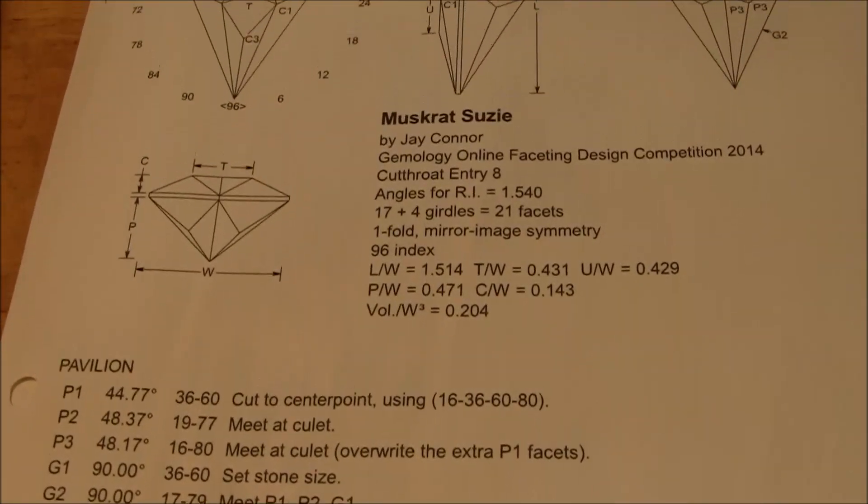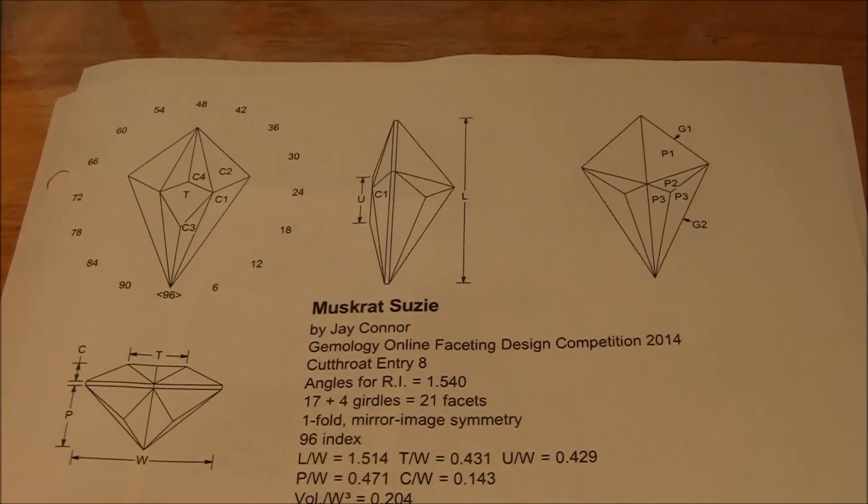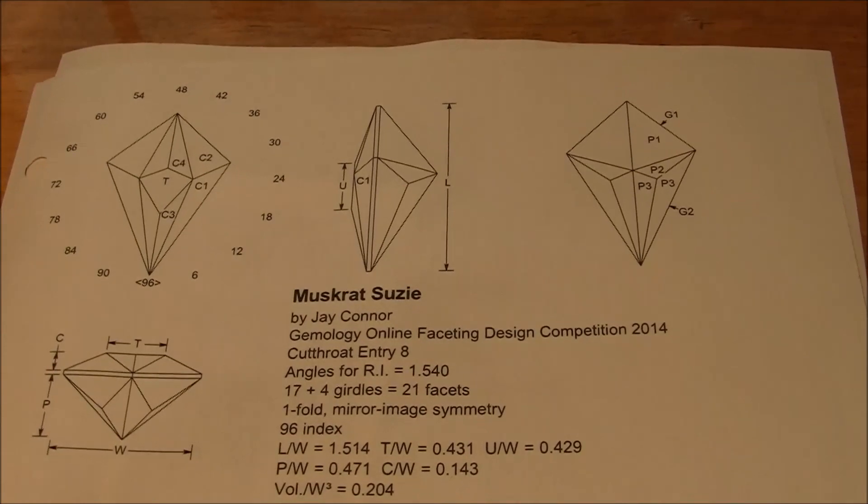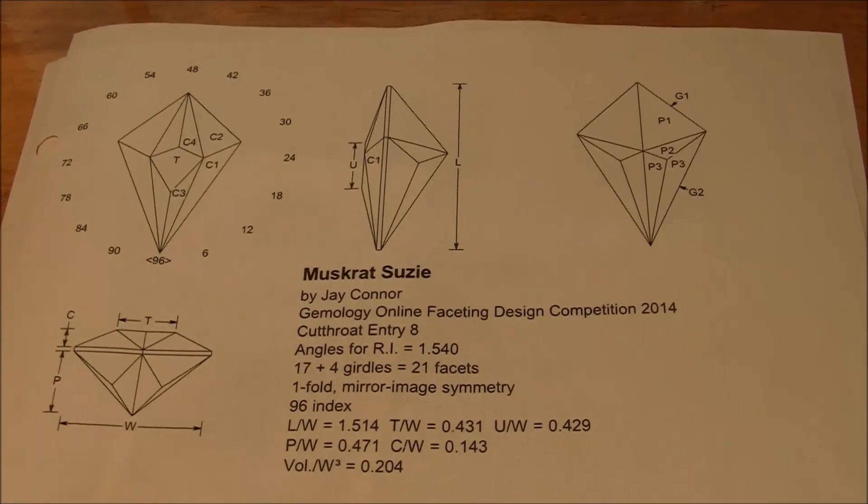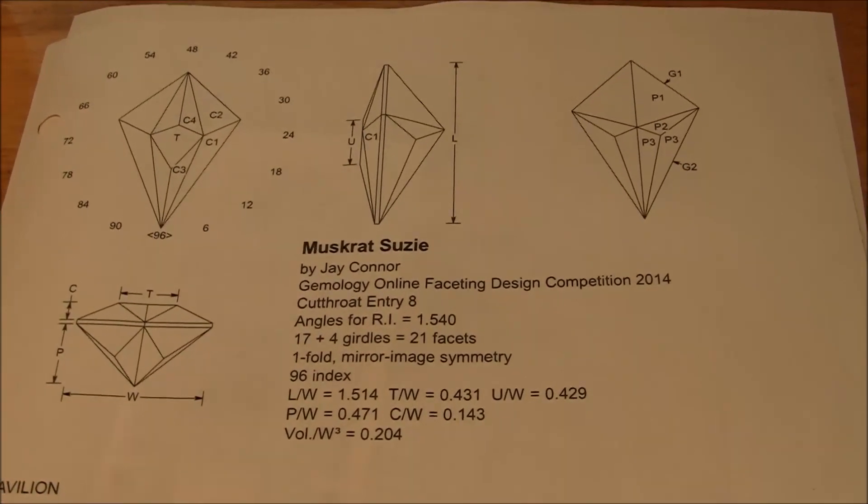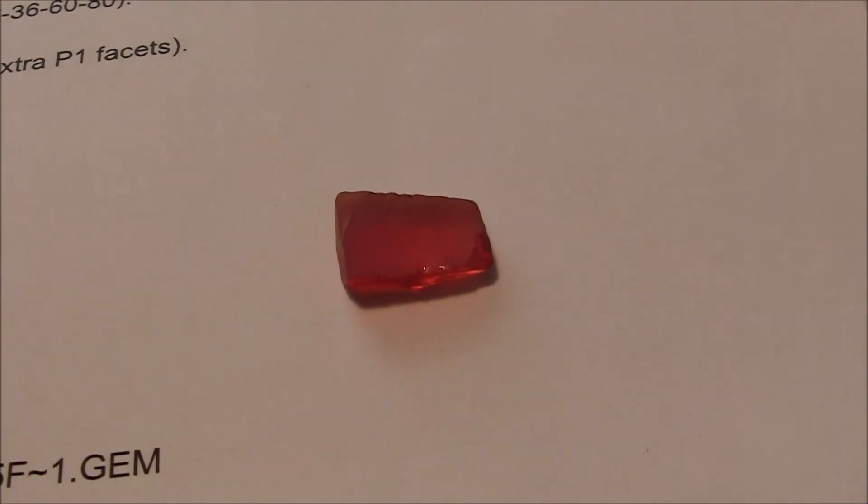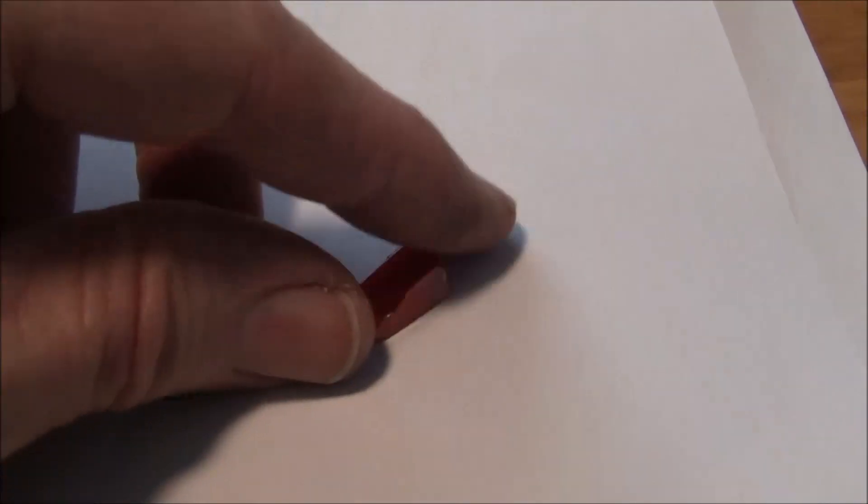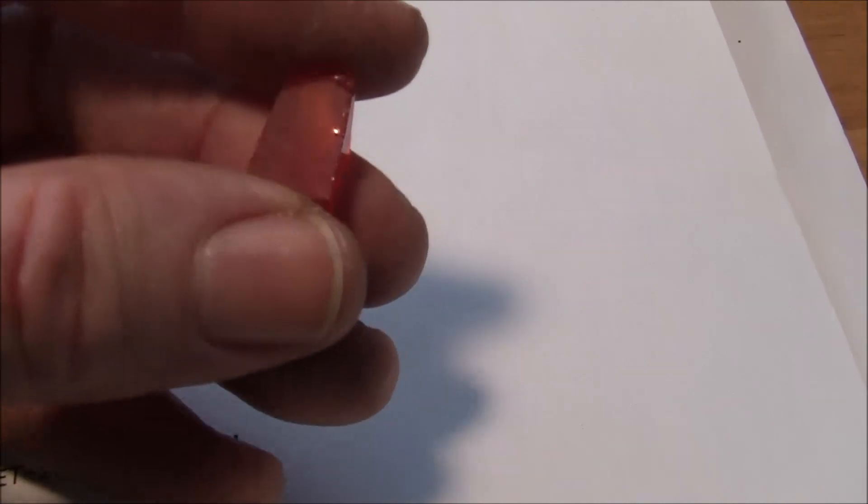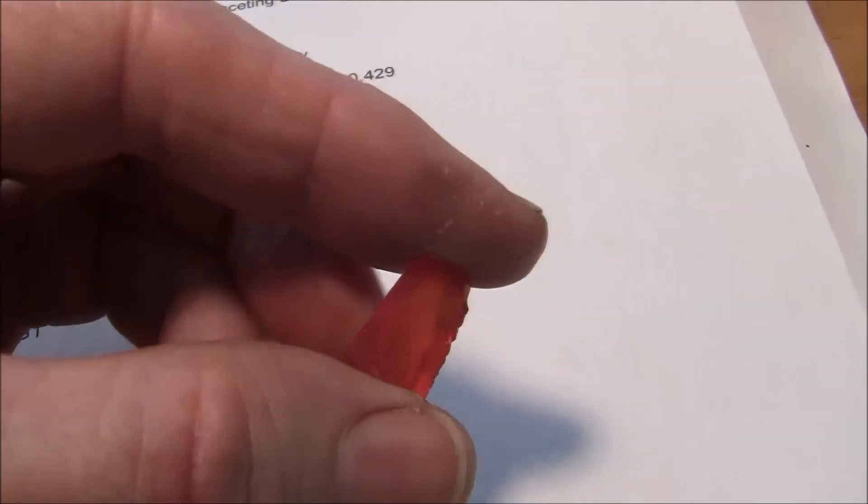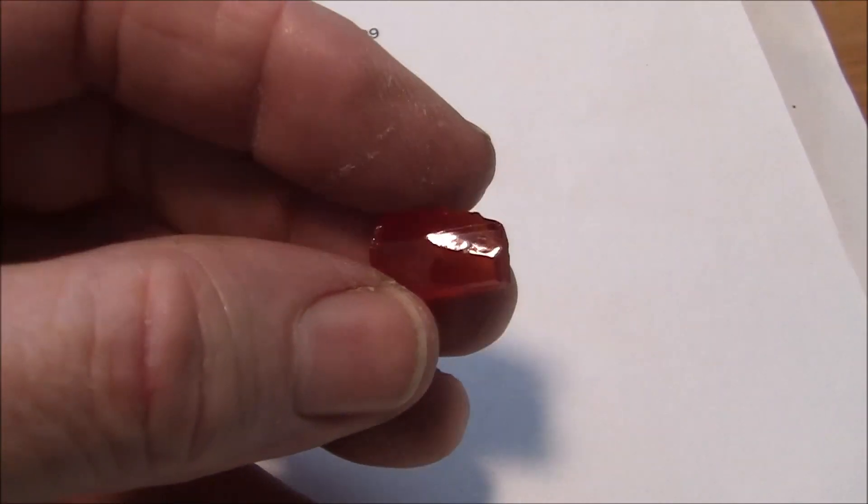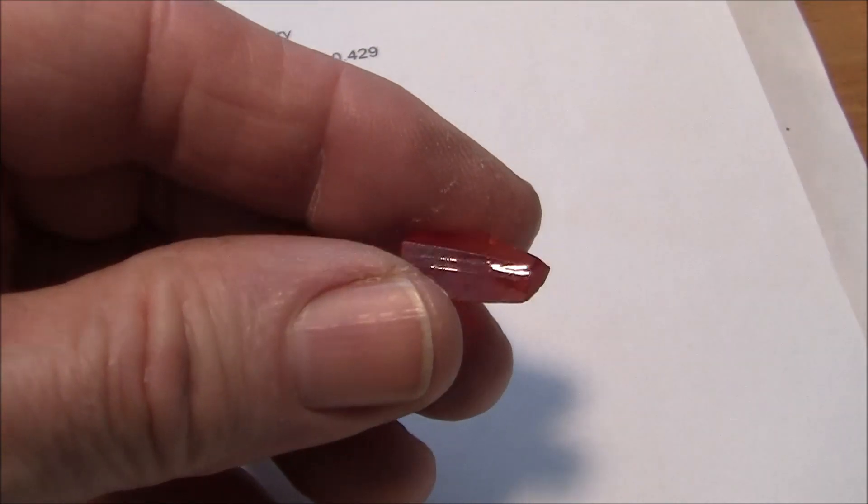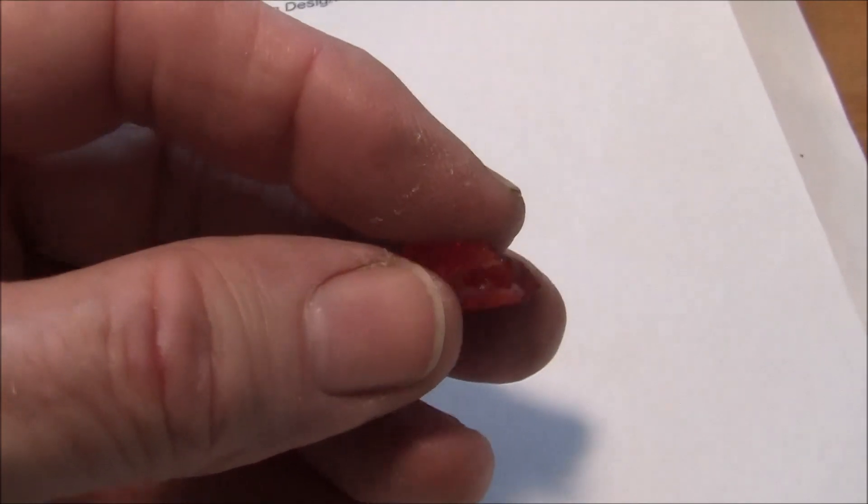I guess you would say it's a kite-shaped design. I'm cutting this piece of CZ today, cubic zirconia. I have an orange-pinkish shade of color, so I'll get it dopped up with epoxy glue.